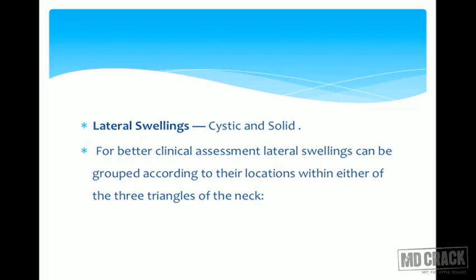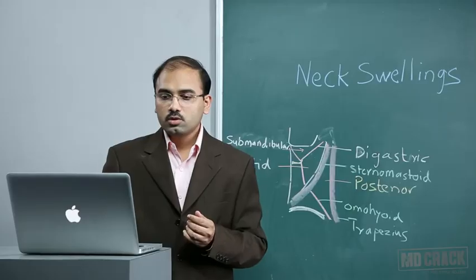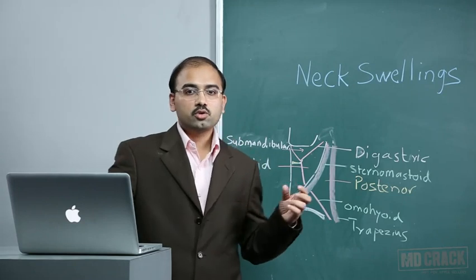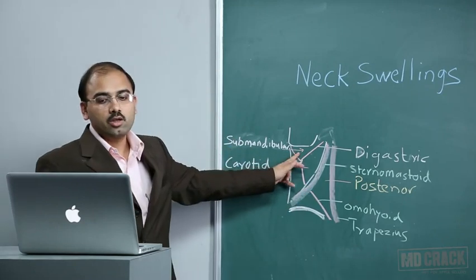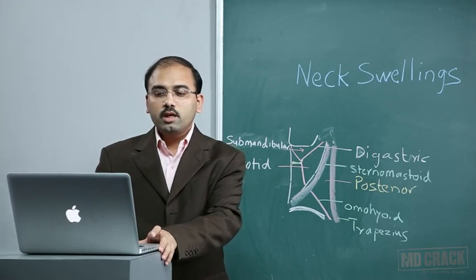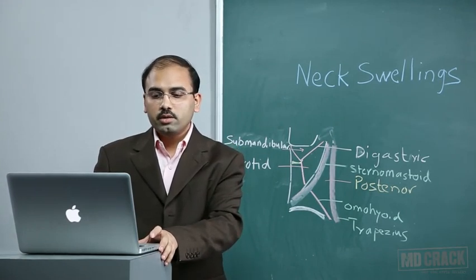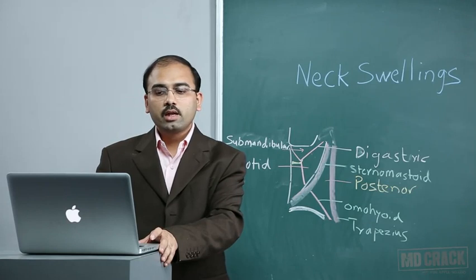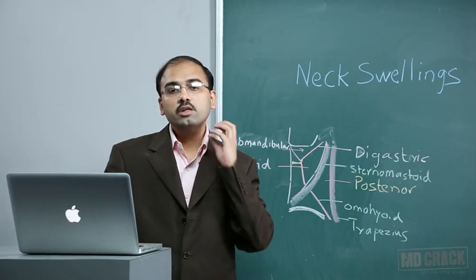Next we have lateral swellings, which can be both cystic and solid. For better clinical assessment, lateral swellings are grouped according to their location within one of the three triangles of the neck. In the submandibular triangle, cystic swellings include plunging ranula, lateral variety of sublingual dermoid, and retention cyst of salivary gland.